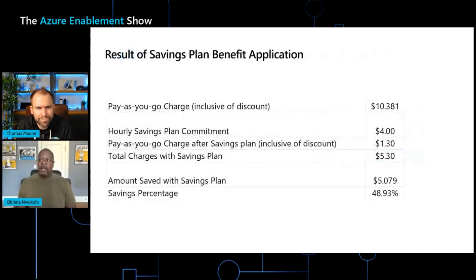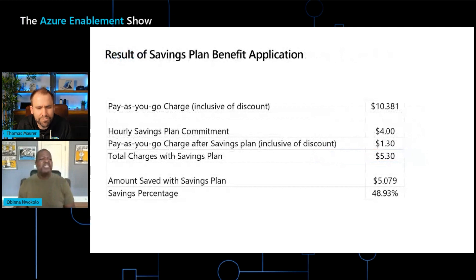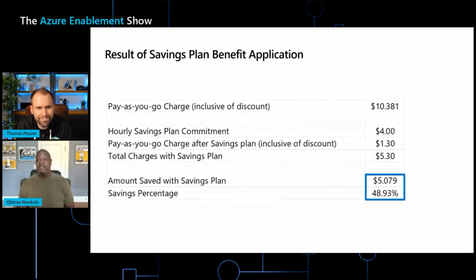Let's look at what happened here. Without the Savings Plan, the cost was $10.38. With the Savings Plan, I made a $4 commitment and incurred an additional $1.30 in on-demand charges, bringing my total to $5.30. That means I saved about $5.08, which is approximately a 49% savings. That's how we do our benefit application.